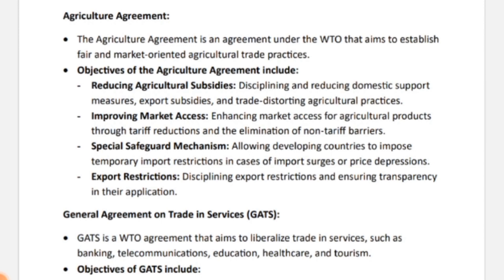Next was export restrictions — disciplining export restrictions and ensuring transparency in their application. The main objective was that export restrictions should be done in a disciplined and structured way, providing benefit without harm, and that their application should be transparent. Any export restrictions introduced should be fair, transparent, and beneficial for all.